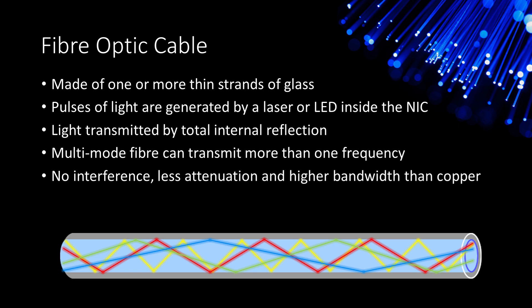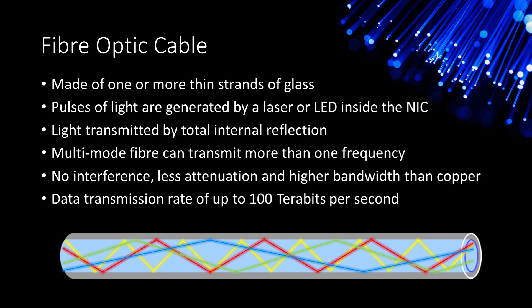Fibre optic cables have lots of advantages over copper. They are more reliable, and the signal quality is much better, because they are not vulnerable to electromagnetic interference. There is no cross-talk between glass fibres if there is more than one inside a cable. There is also less attenuation. Light data can travel ten times further than electrical data before it needs amplifying. This makes fibre optic networks simpler and cheaper to operate. Fibre optic networks are also more difficult to hack. Perhaps the single biggest advantage of fibre optic cable over copper cable is the higher bandwidth. A fibre optic cable can carry much more data than a copper cable of the same diameter. Some fibre optic cables can carry up to 100 terabits of data per second.